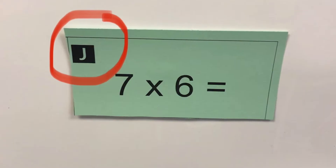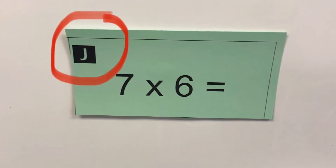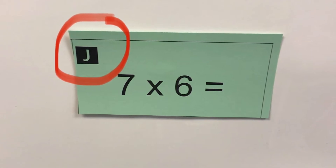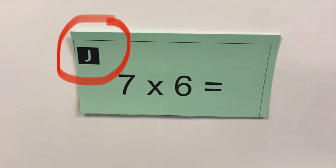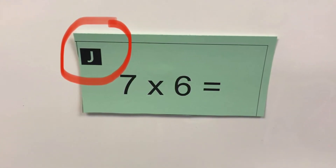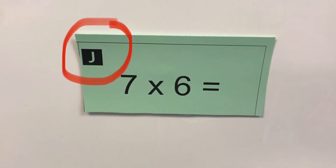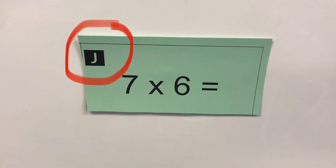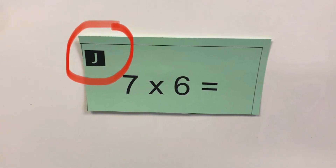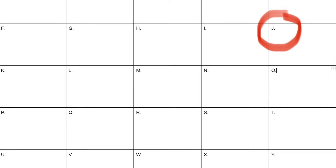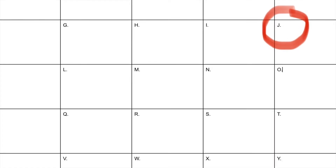Your job is to solve that problem and put it where it belongs on your sheet. For example, this is J — 7 times 6. So you'll solve that: 7 times 6 is 42, and you'll put it in the J box on your answer sheet.